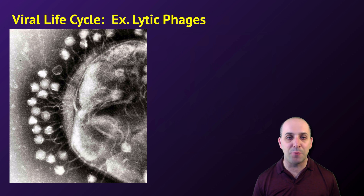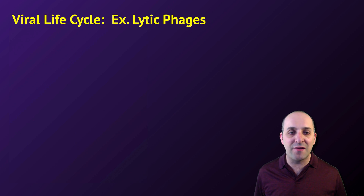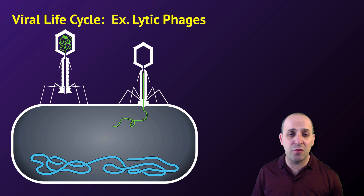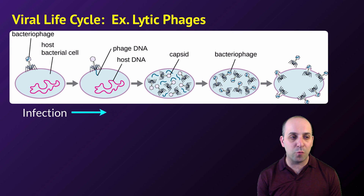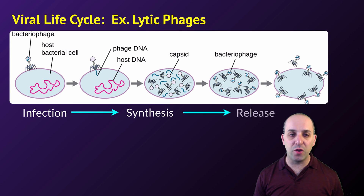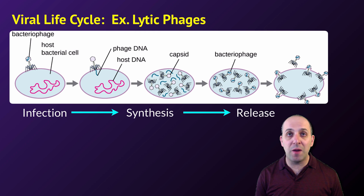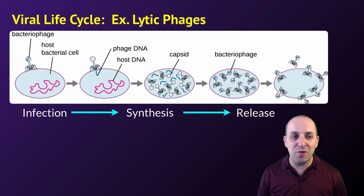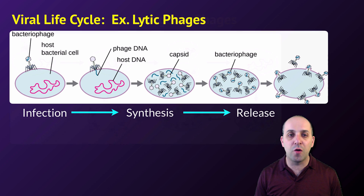Let's look at the classic example: lytic phages — viruses that infect bacterial cells. The bacteriophage attaches to the host cell and injects its DNA. That DNA codes for proteins that destroy the host genome and direct production of more copies of the viral genome and coat proteins. These assemble inside the cell, then the cell explodes, releasing viral particles into the surrounding environment where they go on to infect more bacterial cells.